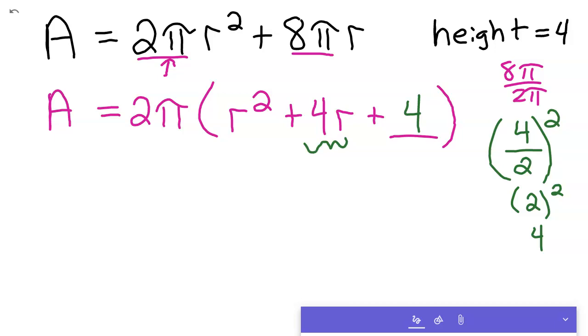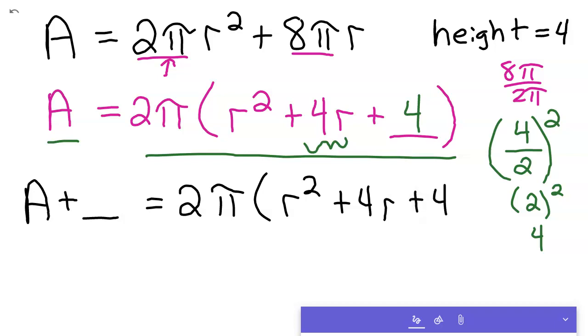Now, our equation's out of balance. By adding a 4, this side of the equation is now heavier than this side on the left. So what we have to do, then, is balance it out by adding something to that A. So we're going to have A plus something equals 2π times r² plus 4r plus 4. Well, notice we multiplied this 2π through there. So imagine you'd have to distribute that through. And so we're going to have to balance this equation. We're going to have to take the 2π times the 4. And so that would be 8π. So to balance this equation now, you just have to add an 8π here. And so now our equation is balanced out.